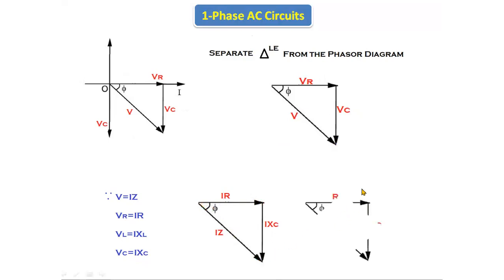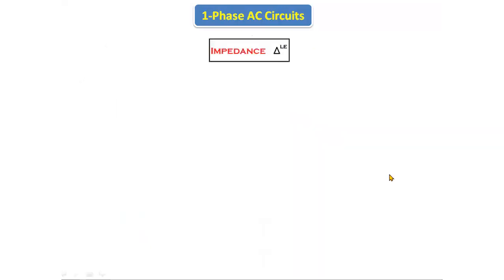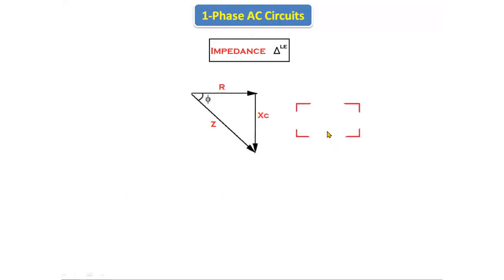Since current is common, we get the triangle with sides R, Xc, and Z. This triangle is called the impedance triangle, which consists of resistance, capacitive reactance, and impedance. Applying the Pythagoras theorem to this triangle, we get Z equals the square root of R squared plus Xc squared. This equation is obtained by using the Pythagoras theorem.